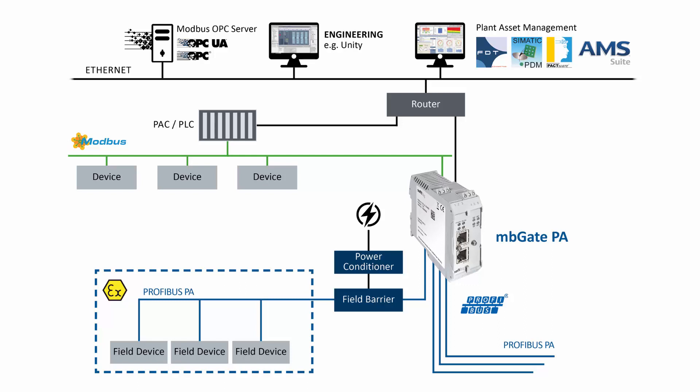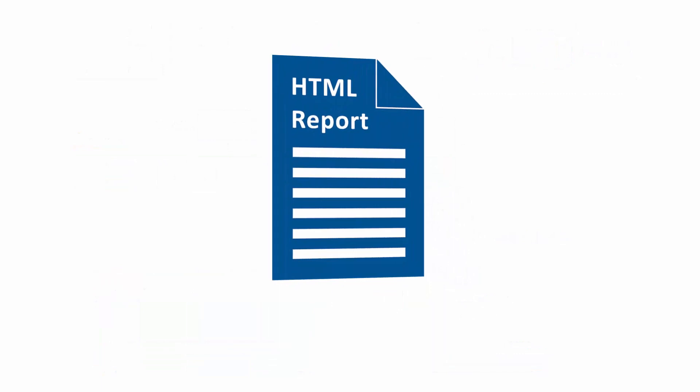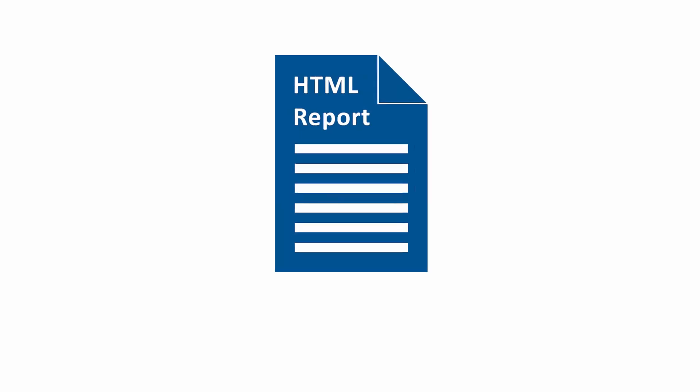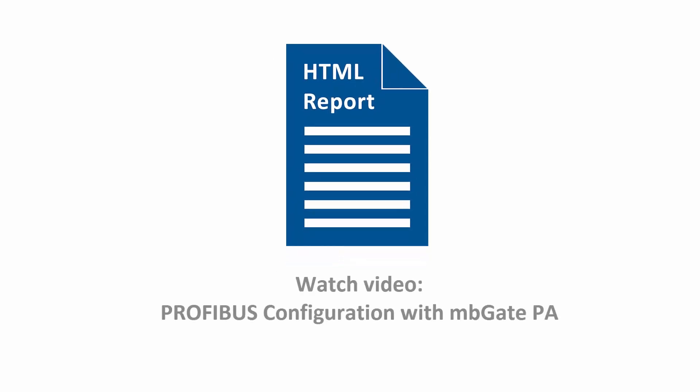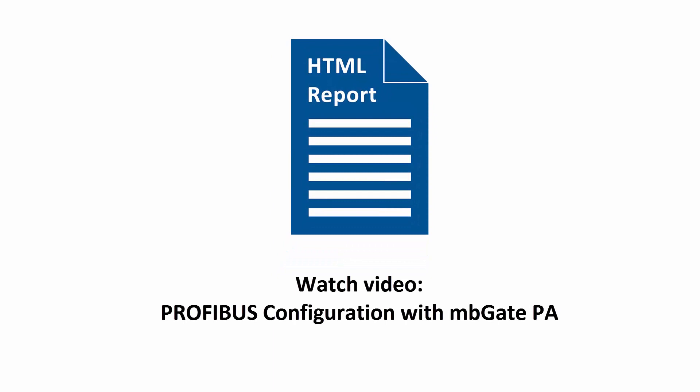In order to set up Modbus registers in Unity Pro for read and write operations, you require the HTML report from the MB-Gate PA. How to generate the Profibus configuration and the HTML report can be seen in the video 'Profibus configuration with MB-Gate PA'.